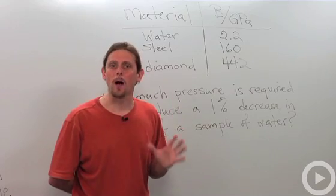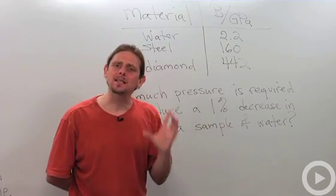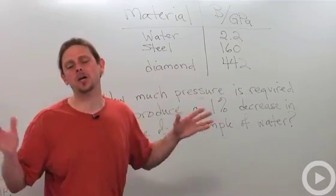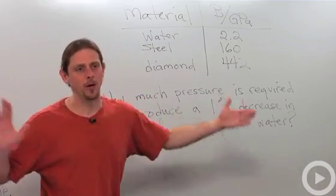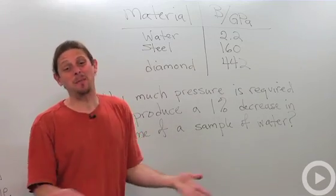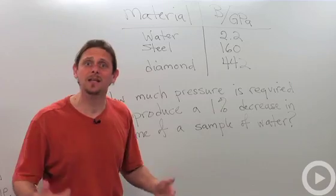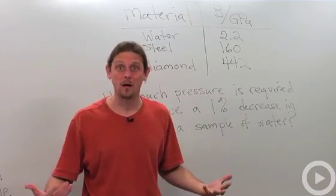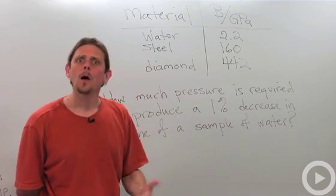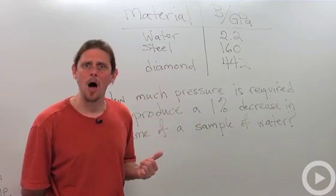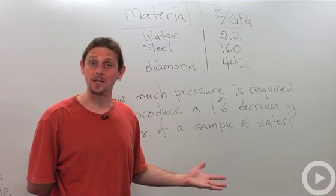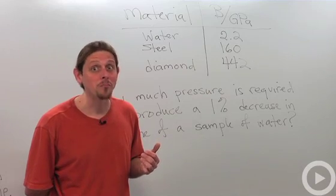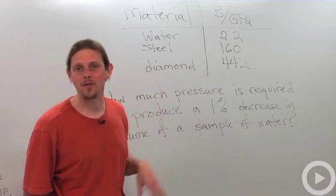Now, one nice way to think about the bulk modulus is that that's the pressure required to give me a hundred percent decrease in volume. Now that's actually an incorrect statement because if I'm going to do a hundred percent decrease in volume, then the thing's not going to be there anymore. So the assumptions that I've made in defining this bulk modulus are actually not valid when the change in volume is that big, but it's a useful way to think about it because if I think about the bulk modulus as the amount that I need for a hundred percent decrease, then the amount that I need for a 1% decrease is just going to be 1% of the bulk modulus, and that's exactly the way that it goes.